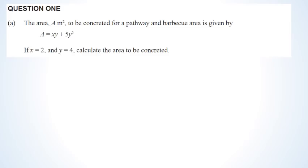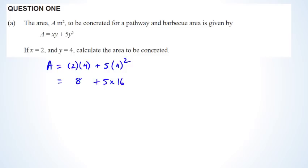The first question we have is to work out what A is. X and Y have been given to us. X is equal to 2 and Y is equal to 4. So you've got 2 times 4 plus 5 times Y squared, which is 4 squared. So 4 times 2 is 8, plus 4 squared is 16 — giving 8 plus 80, which equals 88. A nice easy one to start off this paper with.